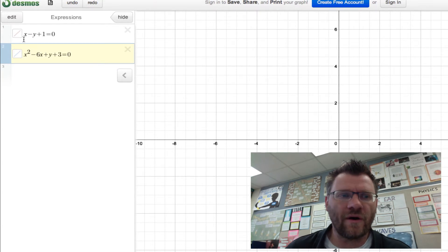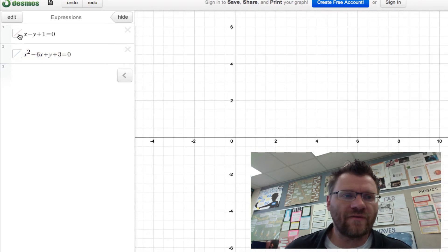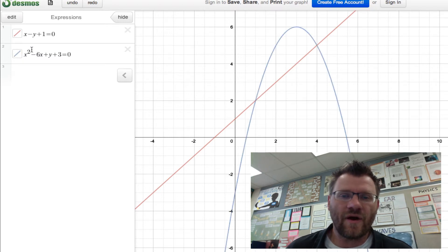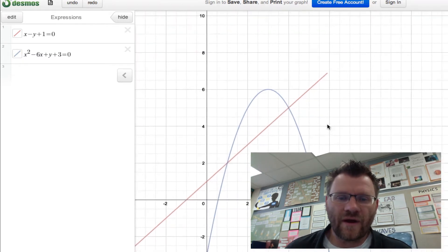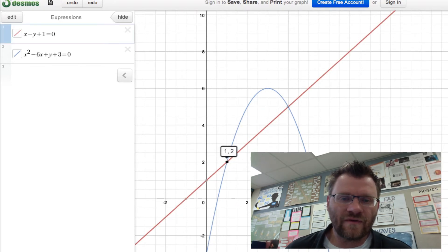Here we are at desmos.com. I've told the program to graph those two functions that we were looking at: x minus y plus 1 equals 0, which is just a line, and x squared minus 6x plus y plus 3, which equals 0. That should be a parabola. What we're really looking for is where these two shapes intersect. And the one point is 1, 2, and the other point is 4, 5. So these are what we call the solutions to this system of equations.